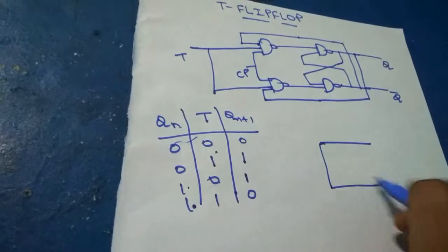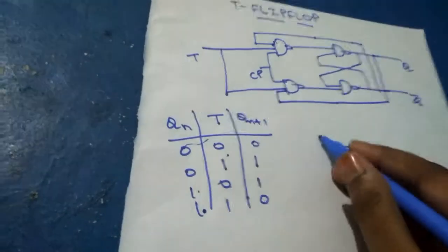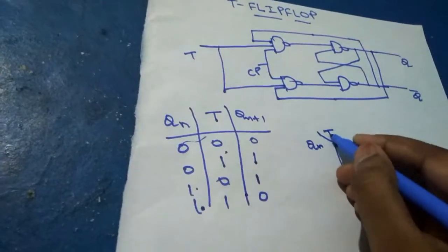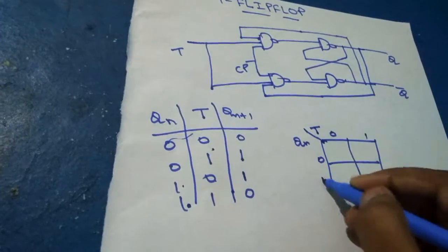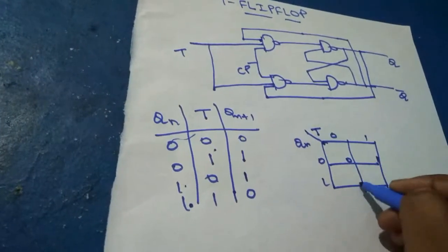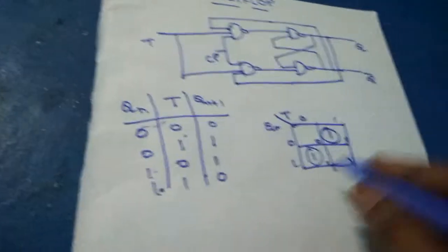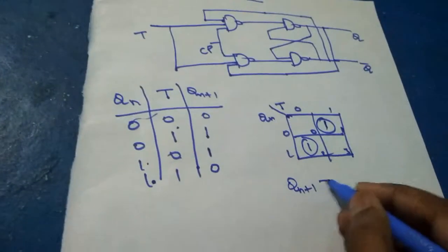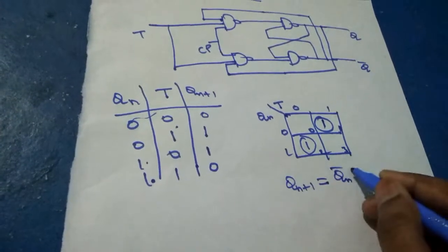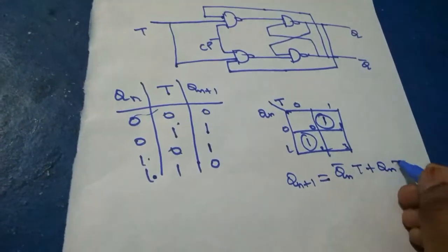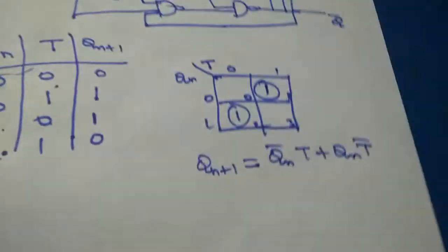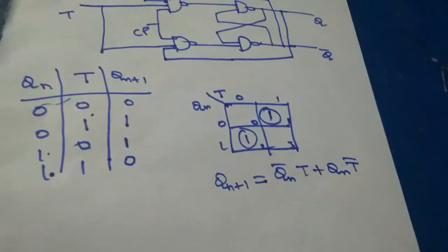Now the K-map of the T flip-flop. Qn and T are the inputs. So 0, 1, 0, 1, 0, 1, 2, 3. We are having both singles. So Qn+1 equals Qn bar T plus Qn T bar. This is the truth table of the T flip-flop.